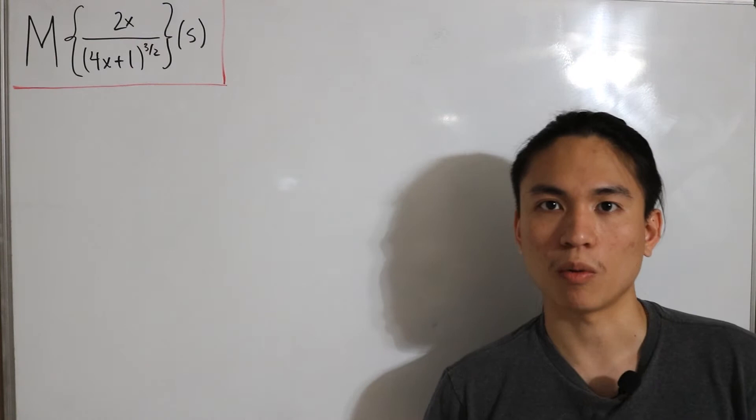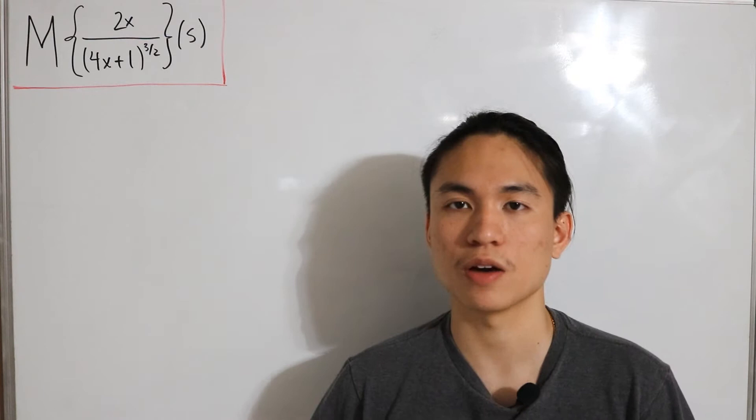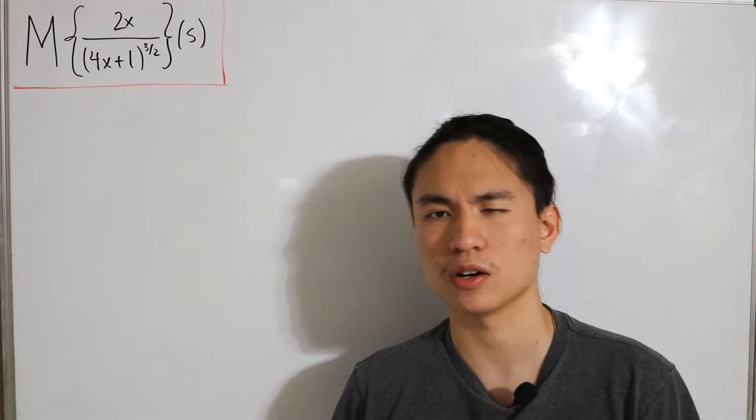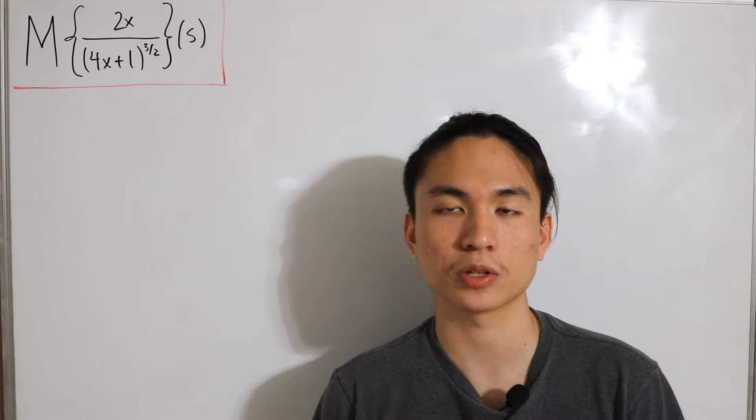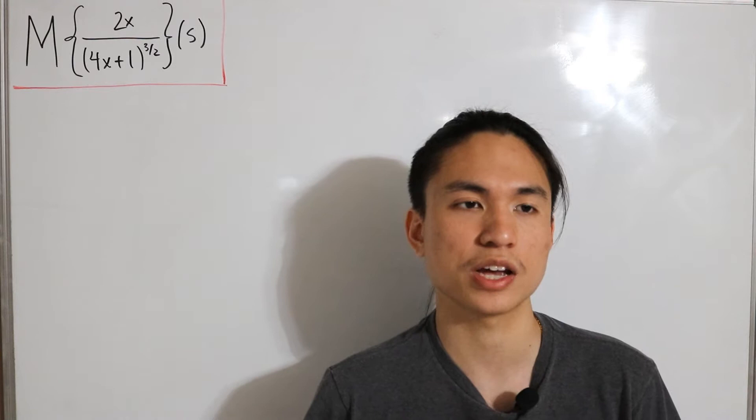So we'll go back to another video. Here's what's known as a Mellin transform, never been introduced on this channel before until now. This is a type of integral transform regarded as a multiplicative version of the two-sided Laplace transform, directly connected to the theory of Dirichlet series. It's often used in number theory, mathematical statistics, and even the theory of asymptotic expansions, and is closely related to the Laplace transform and Fourier series.